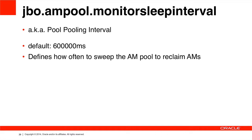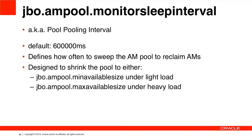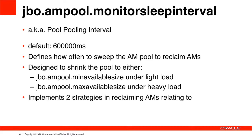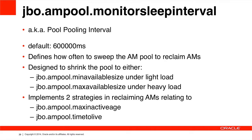These two questions are answered by two parameters apiece. The parameters JBO.AMPool.MinAvailableSize and MaxAvailableSize are designed to shrink the pool to different levels depending on whether the system is under heavy or light load. In addition, in terms of which AMs to reclaim, the pool uses two strategies involving the JBO.AMPool.MaxInactiveAge and JBO.AMPool.TimeToLive parameters.